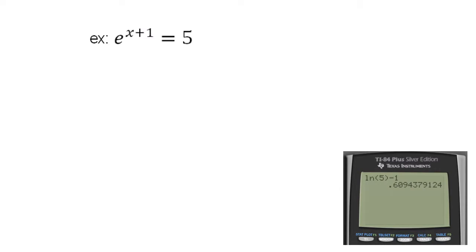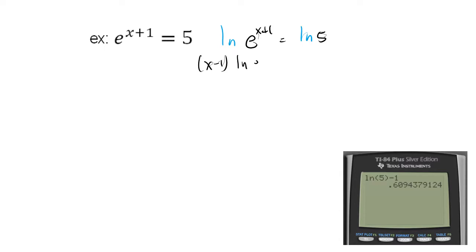Here's another one. This one is a little bit different because now we have e in there. And if we have e, it would make sense for us to take the ln of both sides. Taking the ln of both sides is something you'll do a lot, especially when you get into calculus. So if we take the ln of both sides, that's going to give us x minus 1 times the ln of e equals the ln of 5.